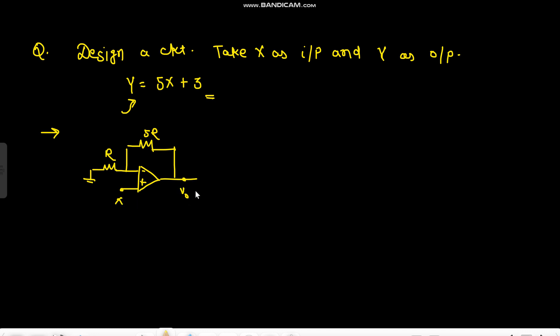So what will be my V0? My V0 will be 5X. Now I have to add these two, so what I can do is I can use a non-inverting adder here with 5X and I can apply 3 volts here. This is R and R. Now if I use this adder here, I will do this for getting non-inverting.